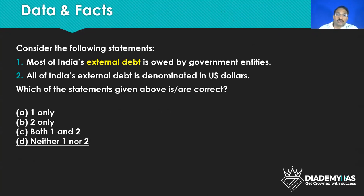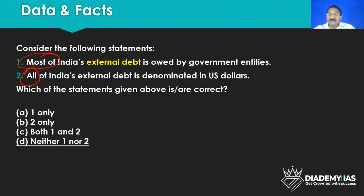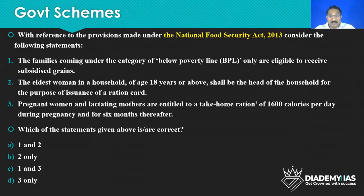Data and fact-based questions — for example, a question based on trend data: 'Most of India's external debt is owned by government entities' or 'All of India's external debt is denominated in US dollars.' Here we are not supposed to remember exact facts, but to have an idea of important trends and data. We don't have to mug it up — if we are genuinely interested, it becomes natural. Then government schemes, which are a very integral part of the economy. The questions are direct, and if you are well aware of the important features of the scheme, you are done.